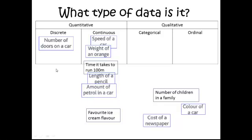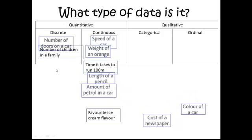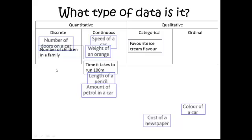The number of children in a family, this is something that is counted so that would be discrete data. Favorite ice cream flavor, that's not numerical data so that's going to be qualitative and it's categorical data. The cost of a newspaper, so money is something that is counted, so money is discrete. And the color of a car is categorical data.